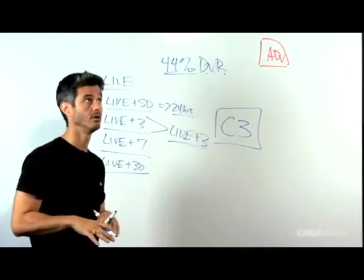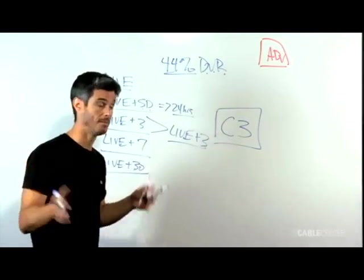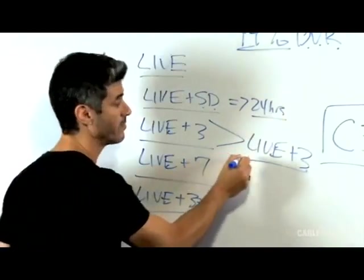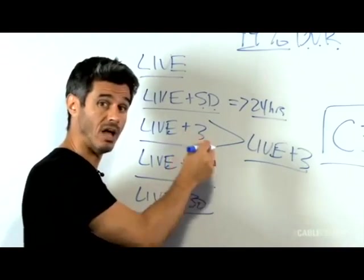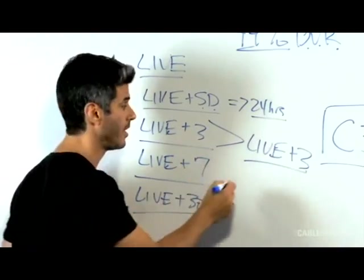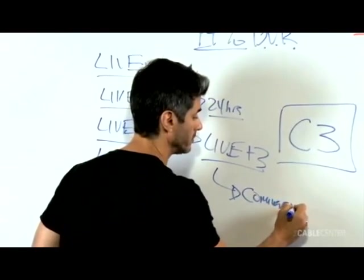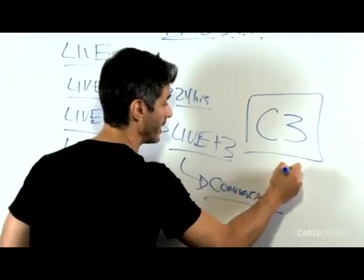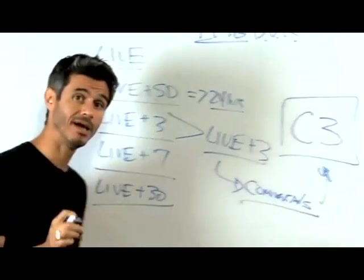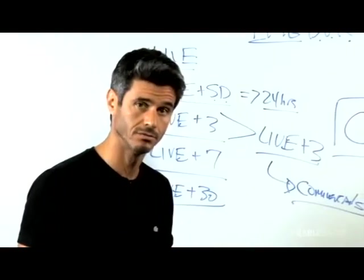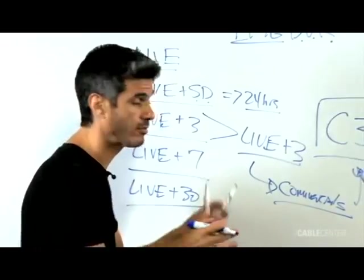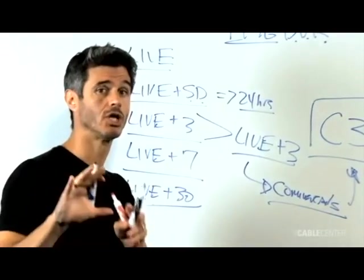So what wound up being the compromise is what's called C3. And this was a major compromise in the industry. What this is, is the number of people who watch the show live plus three, so within three days, but who stay tuned for the commercials. So this is a commercial rating. They pay only for the people who watch within three days and watch the commercials.